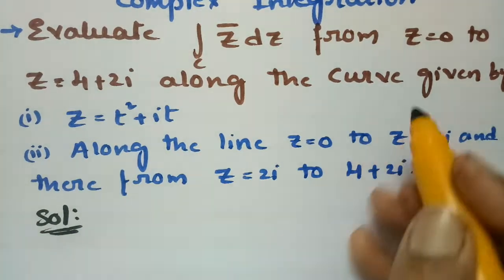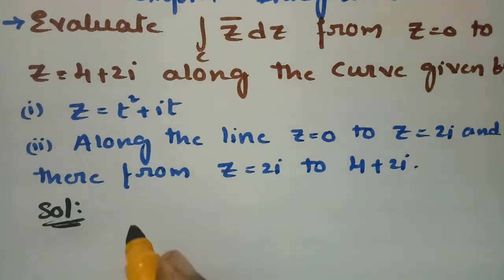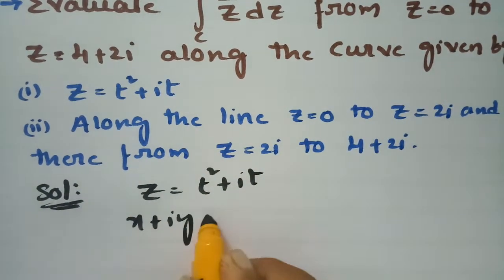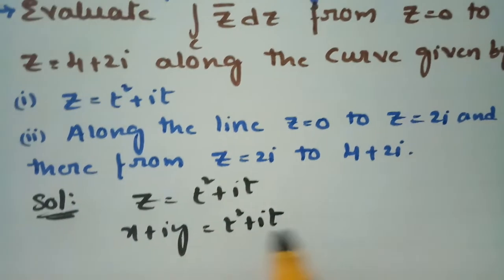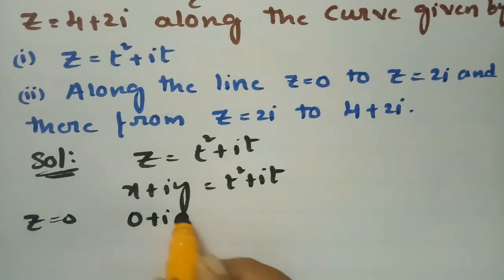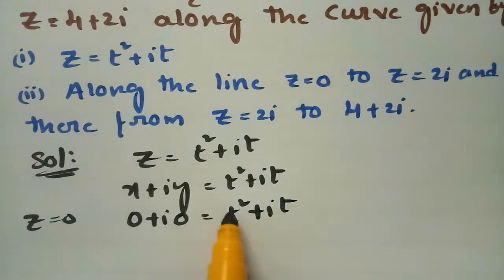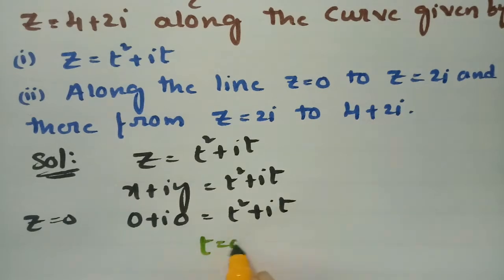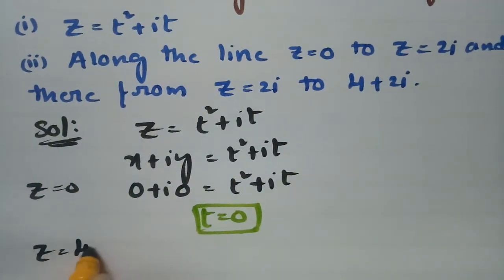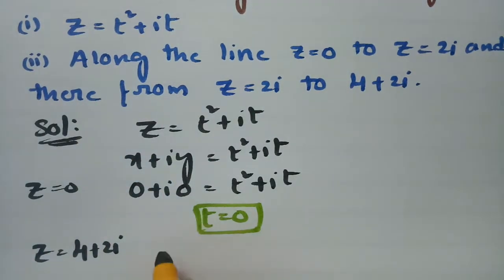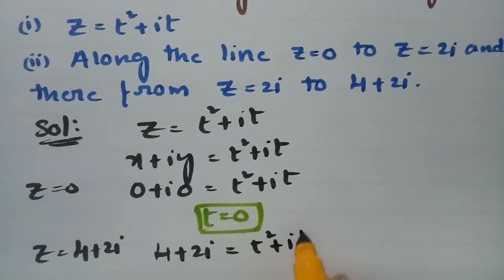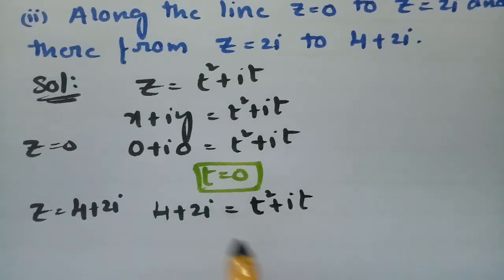The given curve is from z=0 to z=4+2i, where z is given as t² + it. Since z = x + iy = t² + it, if z=0 then t=0. For z=4+2i, substituting gives t²=4, therefore t=2.